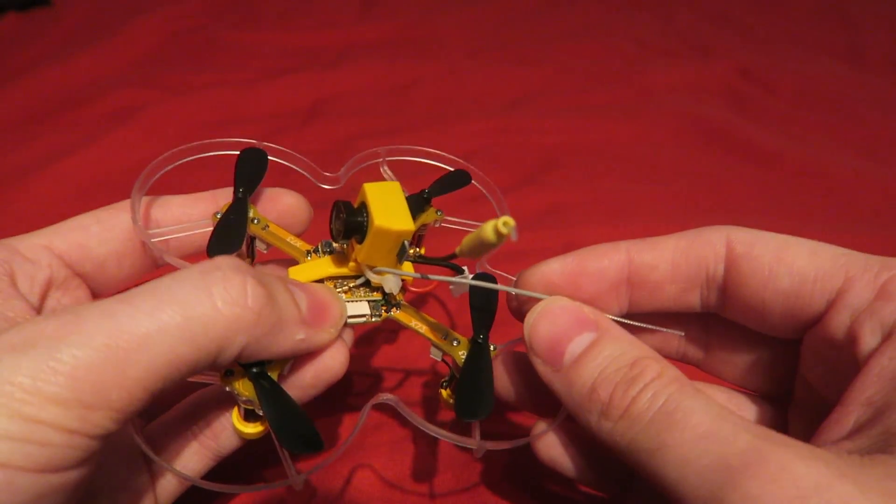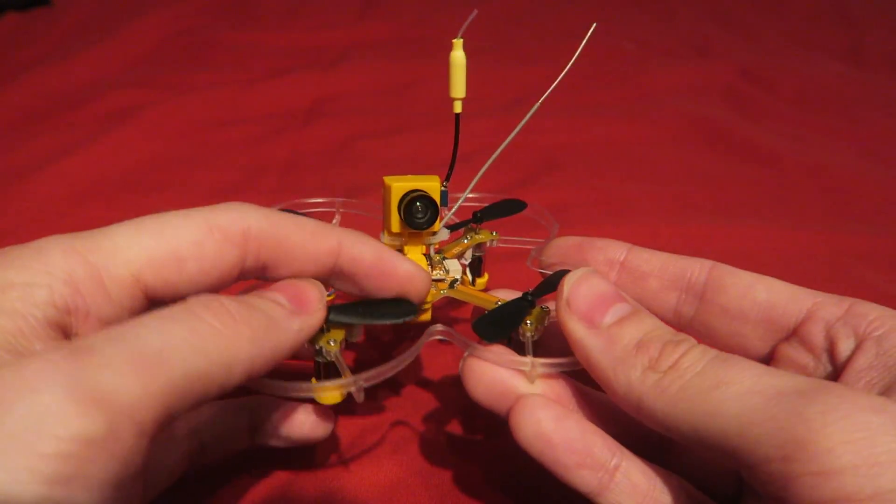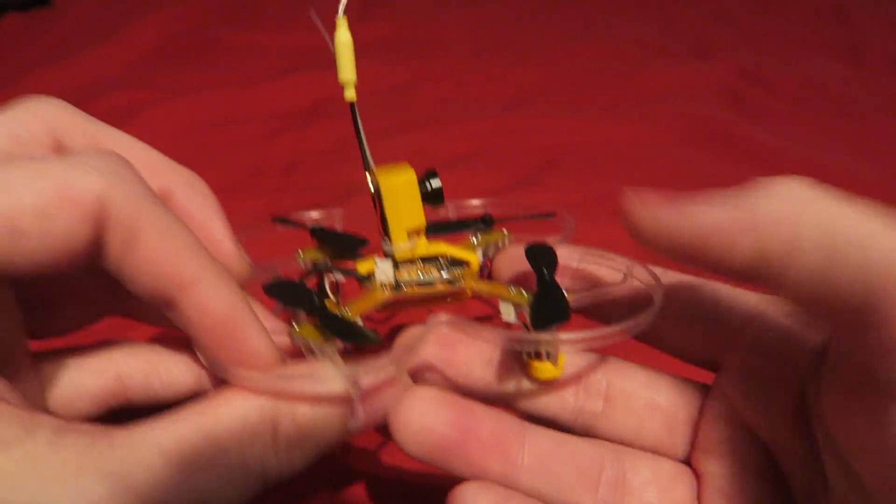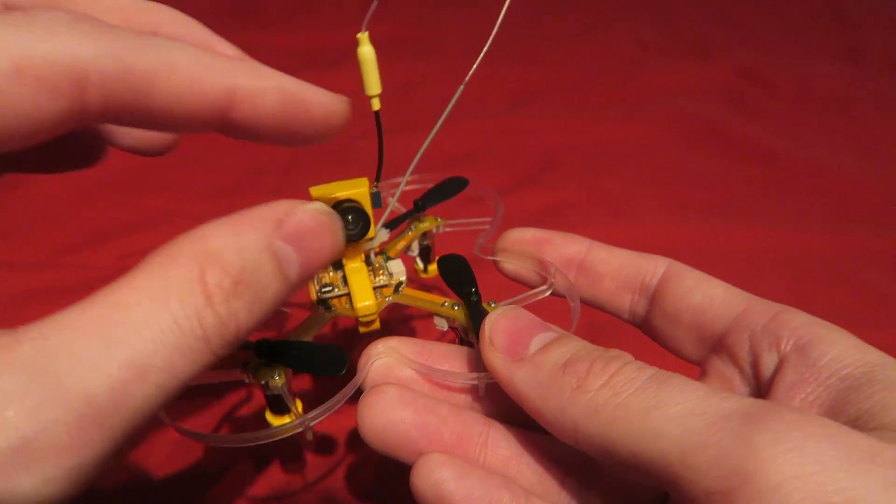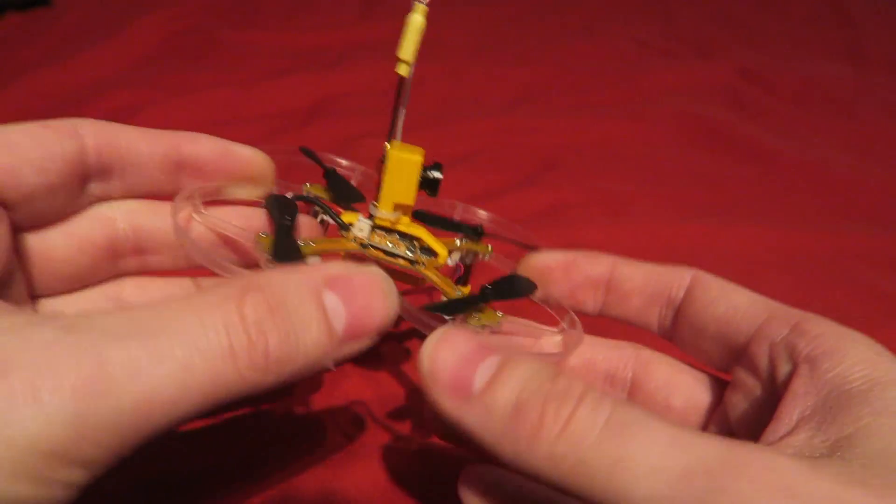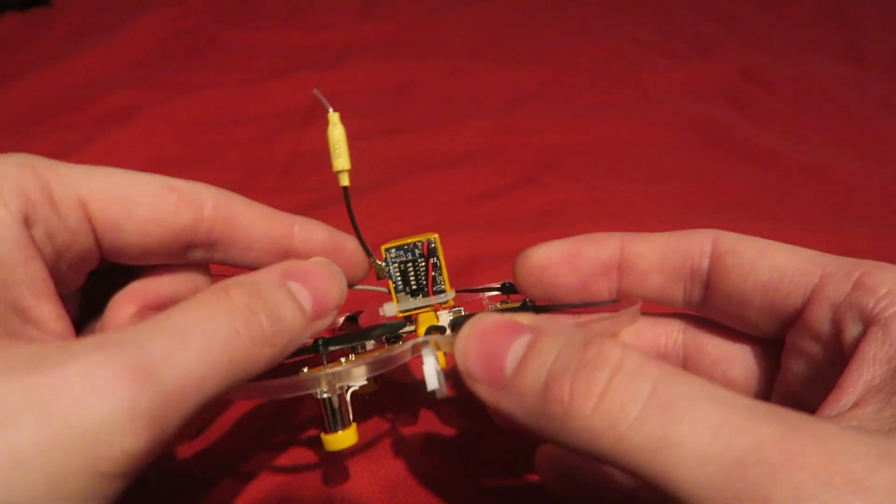Moving up from there we have this part of the frame which is plastic and then we have the camera. This is one of those 170 degree cameras that we are used to, it's very similar to the one on the QX80 and 90.